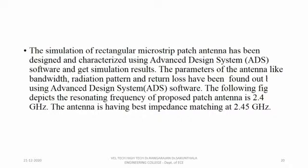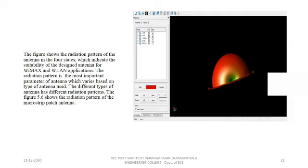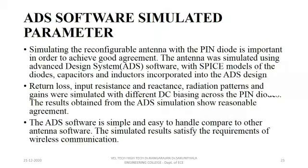The parameters of the antenna like bandwidth, radiation pattern, and return loss have been found out using ADS software. This visual image shows the effects of the pin diodes on the simulated patterns of the antenna in different switching states with different resonant frequencies across the operating bandwidth. Here is the radiation pattern of the antenna in 4 states, which indicates the suitability of the designed antenna for WiMAX and WLAN applications. The radiation pattern is the most important parameter of the antenna, which varies based on the type of antenna used. ADS software simulated parameters — return loss, input resistance and reactance, radiation patterns, and gains — were simulated with different DC biasing across the pin diodes.